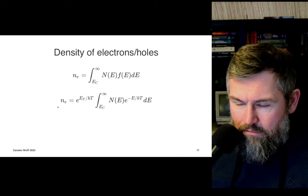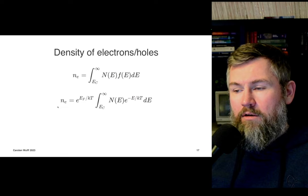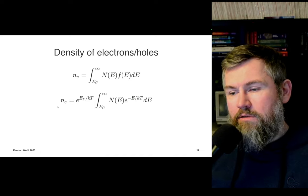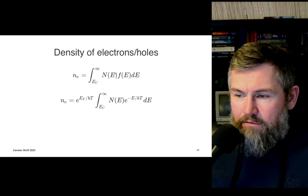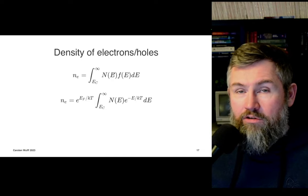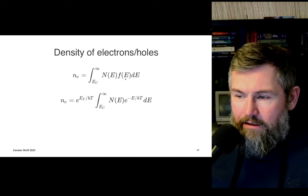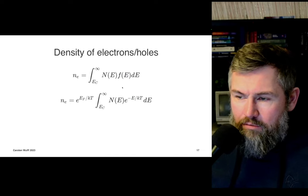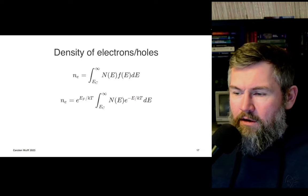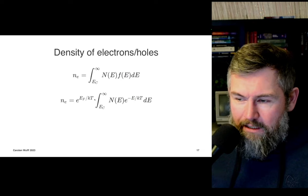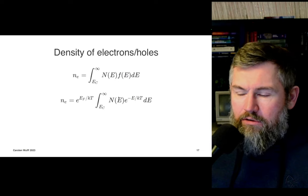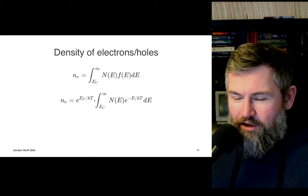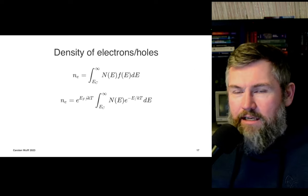If there are quantum states, Fermi-Dirac statistics tells you the probability of electrons being there. To compute the density of holes and electrons I have to integrate: I need the density of states as a function of energy level, multiply by Fermi-Dirac statistics, and integrate over the full conduction band to get the number of electrons. If the Fermi level is independent of temperature, I can pull out the e^(E_F/kT) term. That's why kT appears all over the place in semiconductor equations.